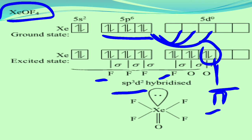The remaining d orbital of xenon forms a pi bond with oxygen, which is not considered in the hybridized state. Therefore, the hybridization is sp3d2, and the structure of XeOF4 is square pyramidal according to VSEPR theory.